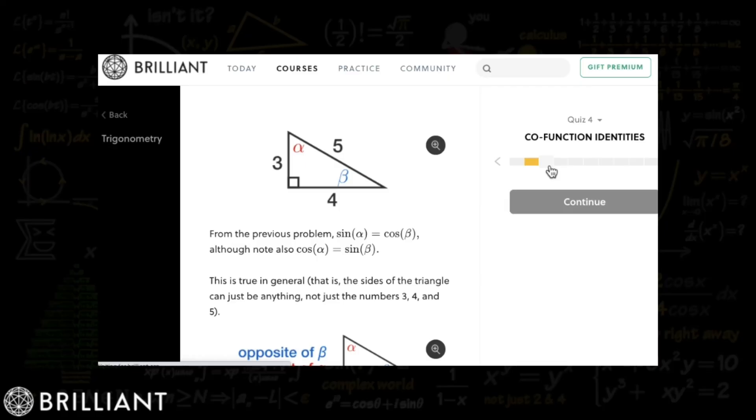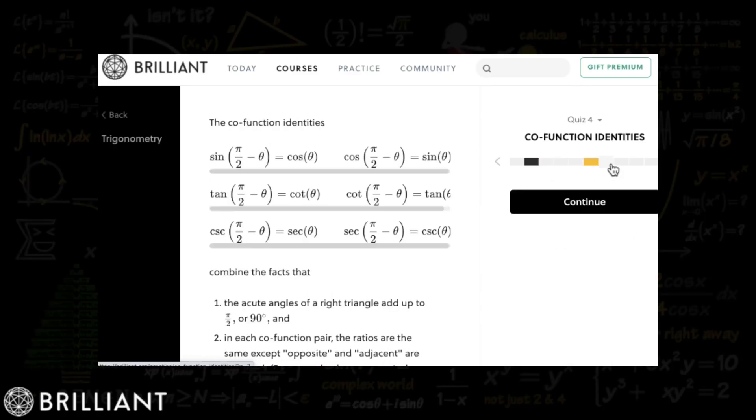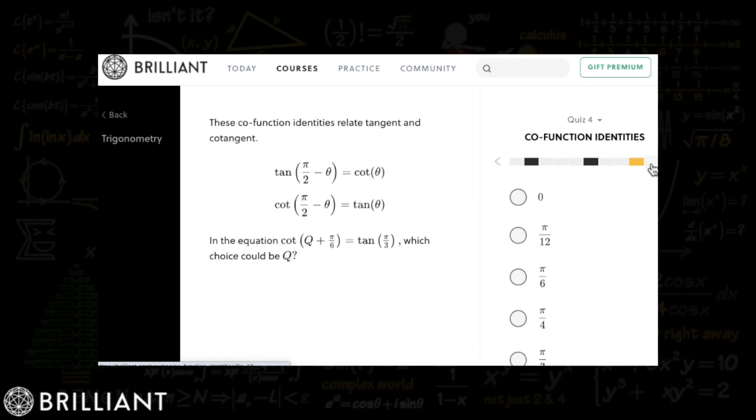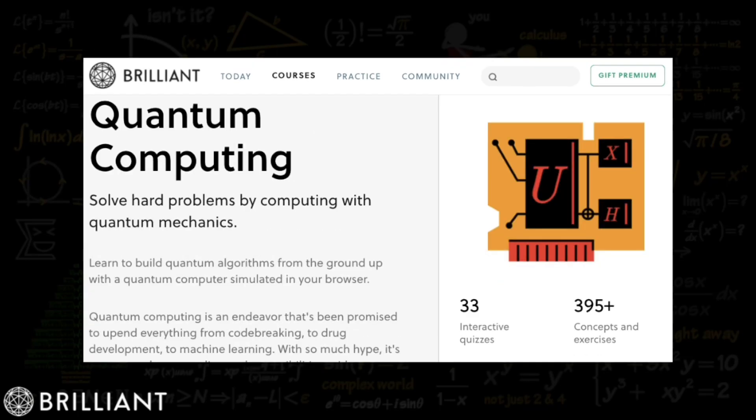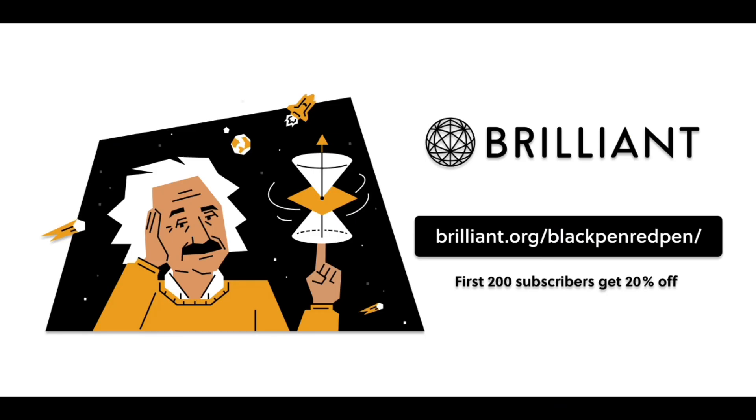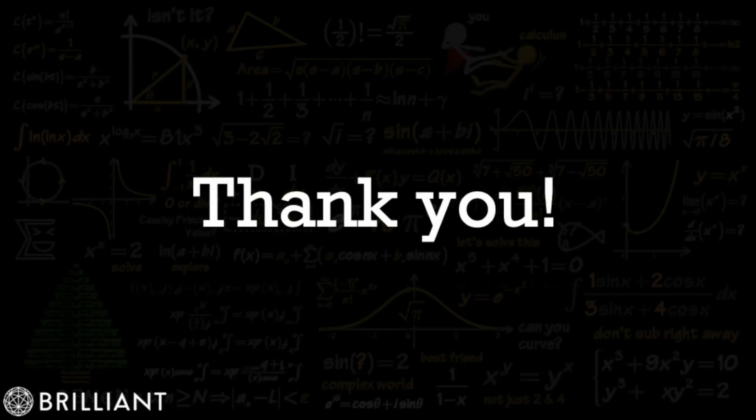or maybe you just want to learn something new such as cryptocurrency or quantum computing. If that's the case, then you can use the link in the description brilliant.org/blackpenredpen because this way it will give you a 20% off discount for their annual premium subscription. Finally, I want to thank you for checking them out and big thanks to Brilliant for sponsoring this video.